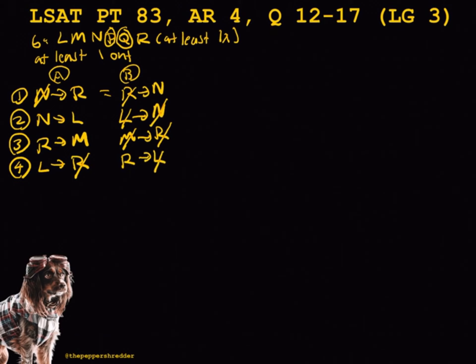Now we can synthesize the rules. Rule 1a states that if N is out, then R must be in. This can be connected with Rule 4b, which states that if R is in, L must be out. Rule 1a can also be connected with Rule 3a, which states that if R is in, M must be in. Finally, Rule 4b can be connected with Rule 2b, which states that if L is out, N is also out.